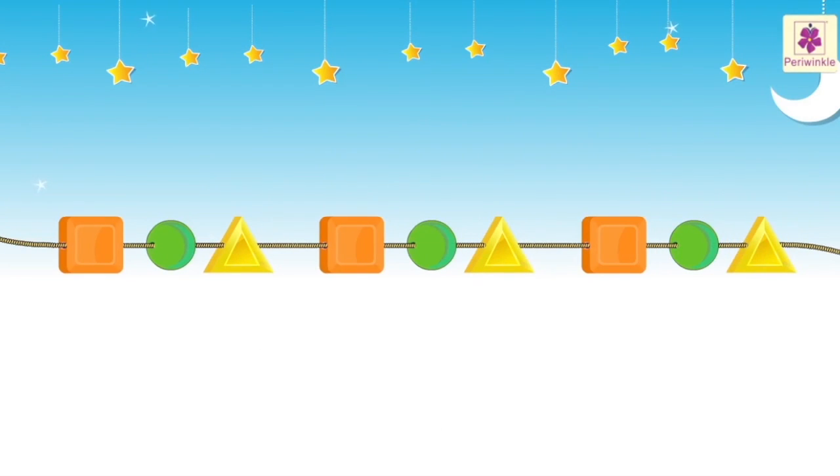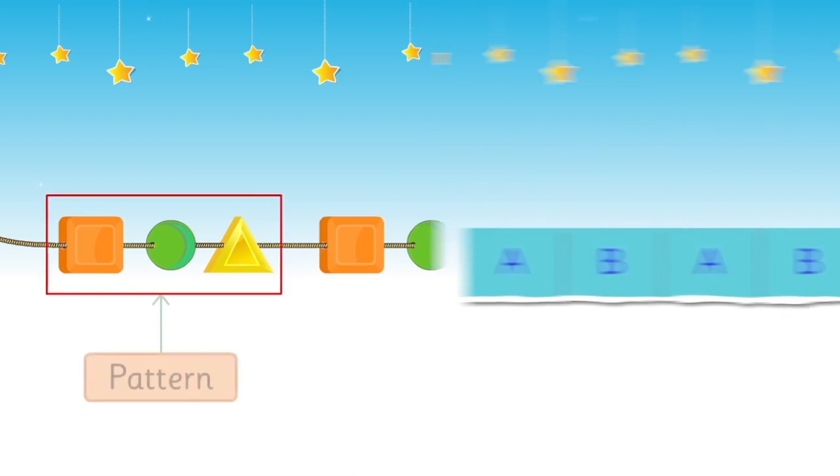Look at the bracelet. We have a square, a circle, a triangle, then again a square, a circle, a triangle, and so on. This is called a pattern as it repeats itself.